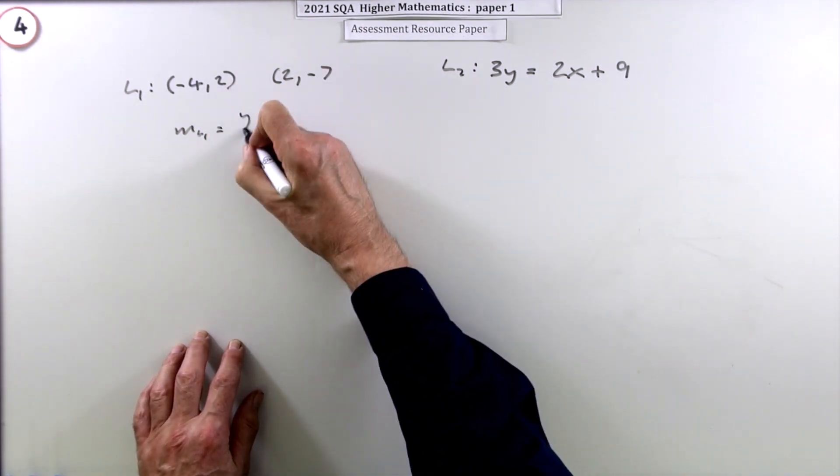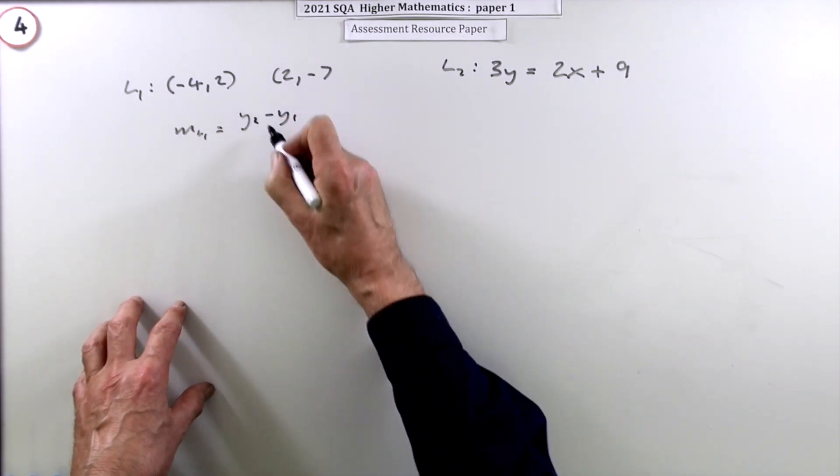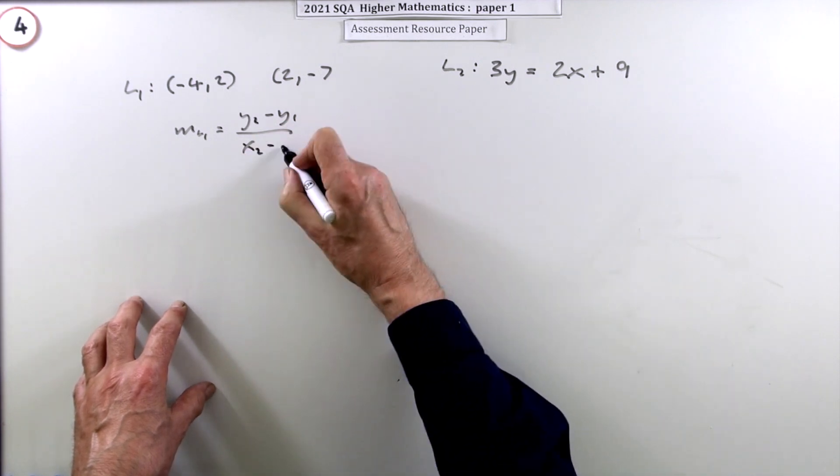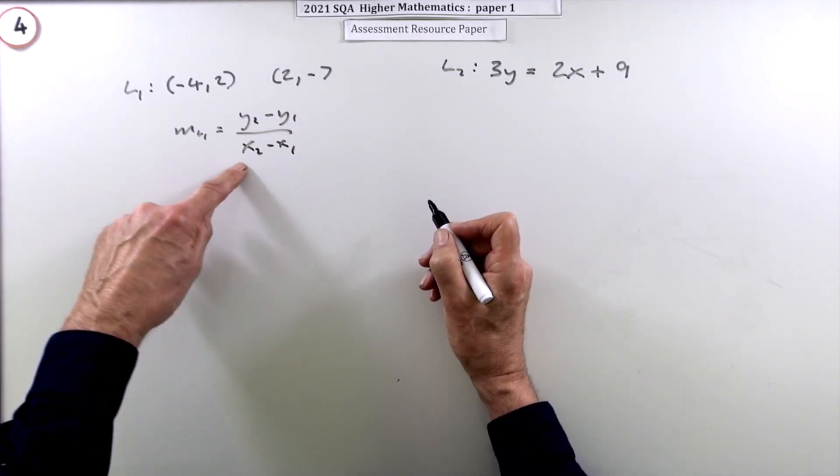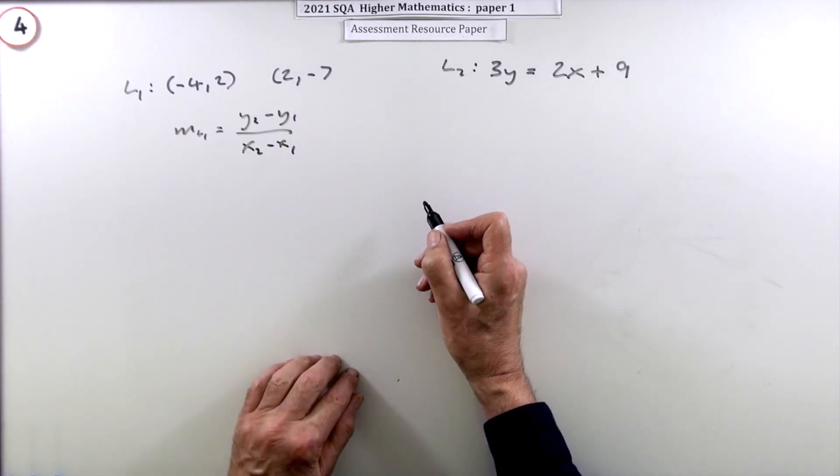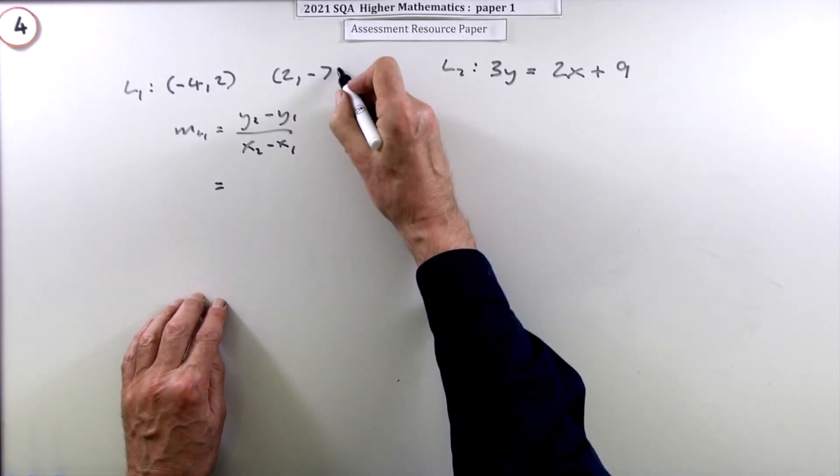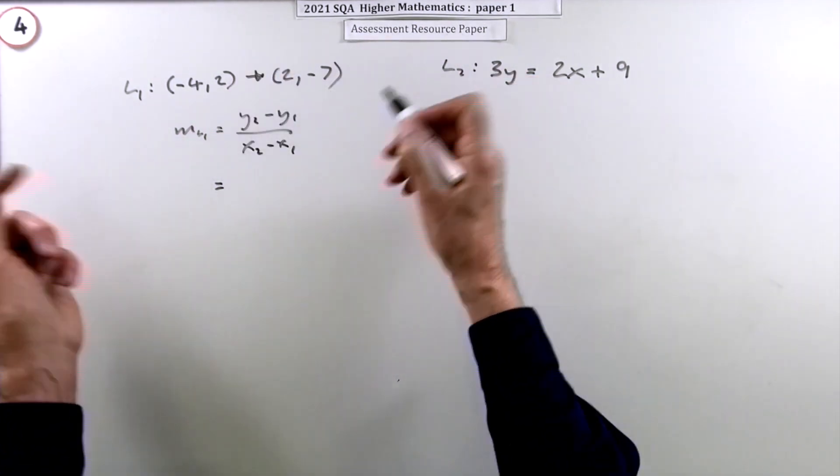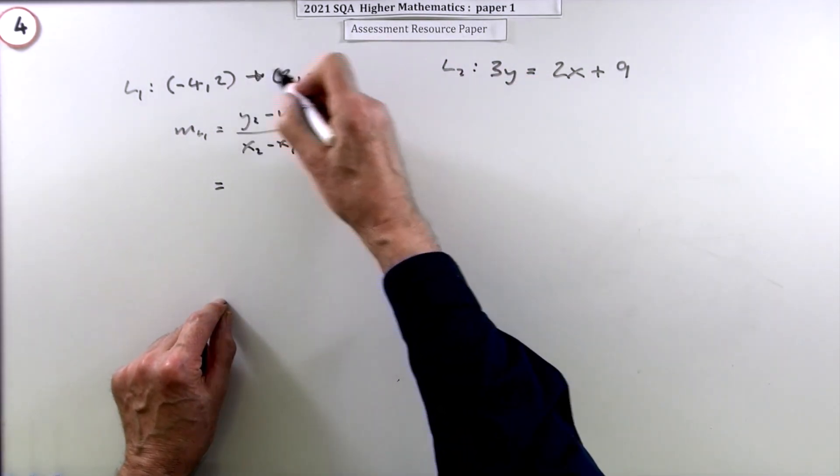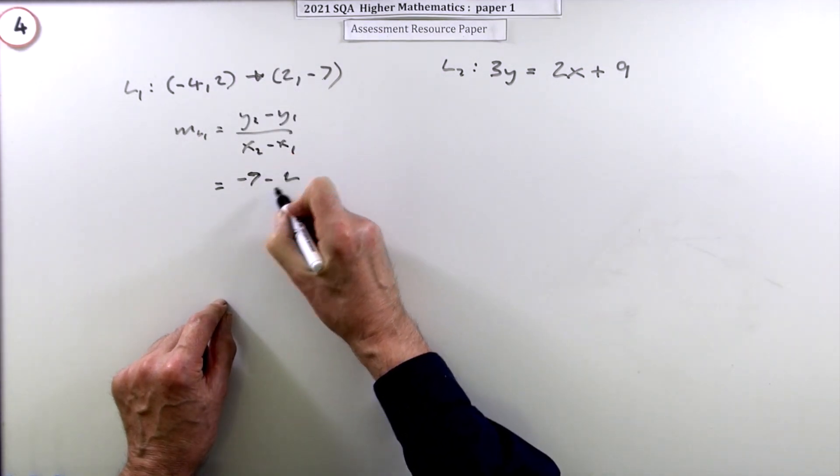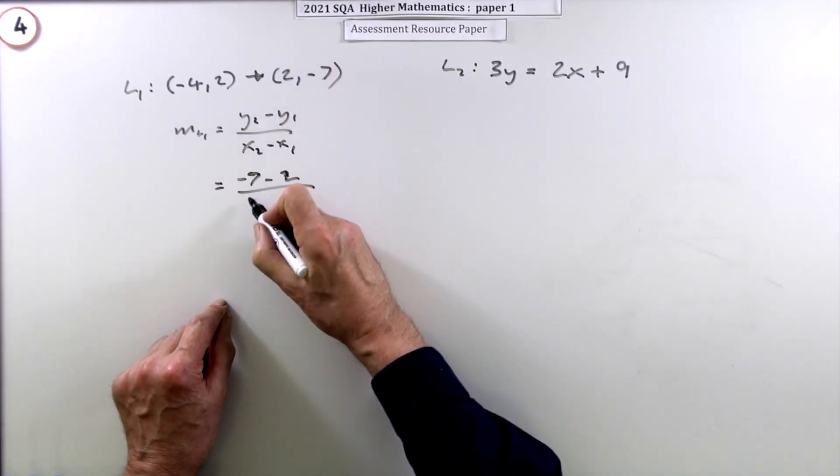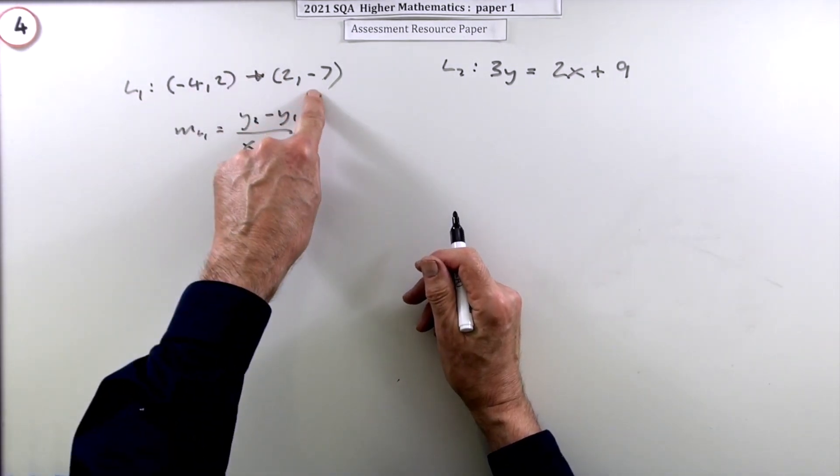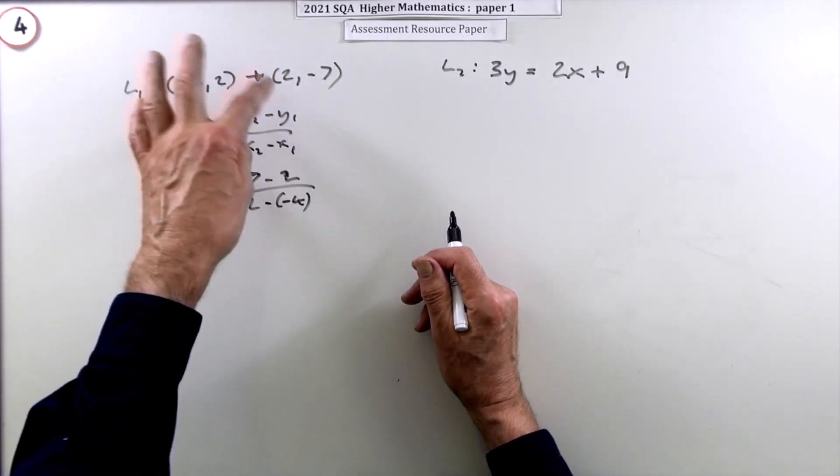That'll be the difference in the y coordinates, delta y over delta x, or y2 minus y1 over x2 minus x1, meaning how far along and how far up. So that'll be, taking it in this order going forward, negative 7 take away negative 5, so take away 2, over 2 take away negative 4. You can do it the other way around, 2 take away negative 7, negative 4 take away 2, as long as you keep it consistent.